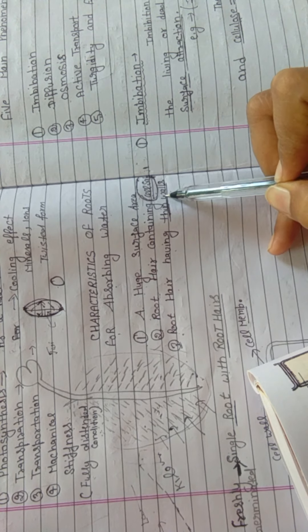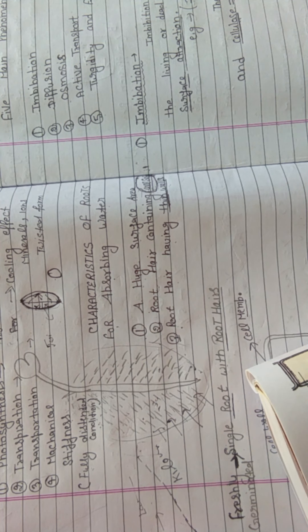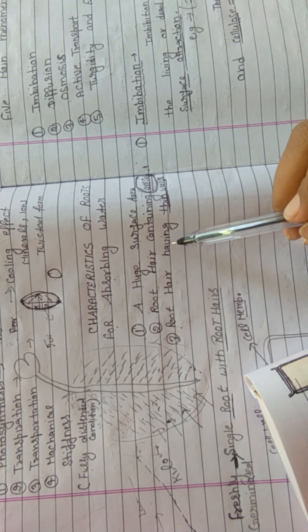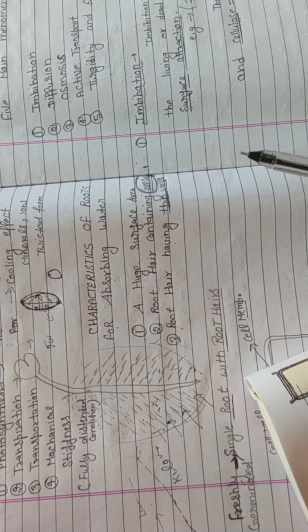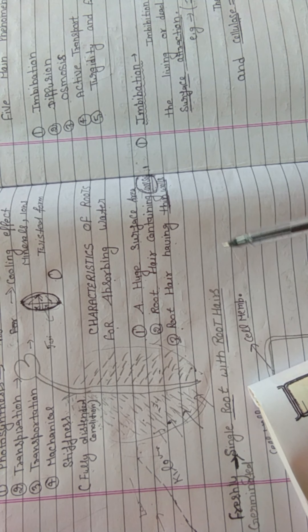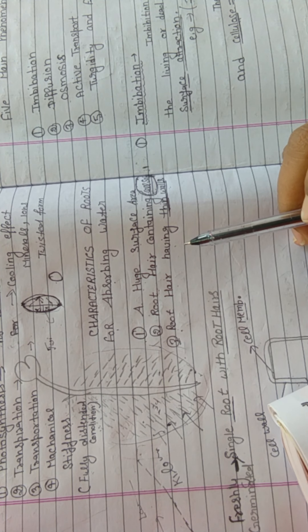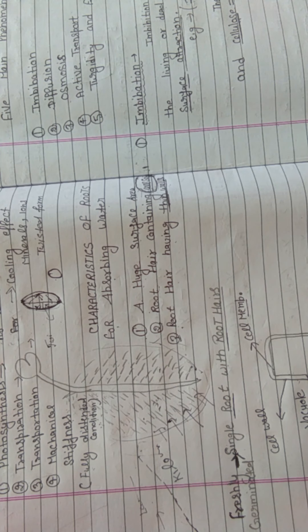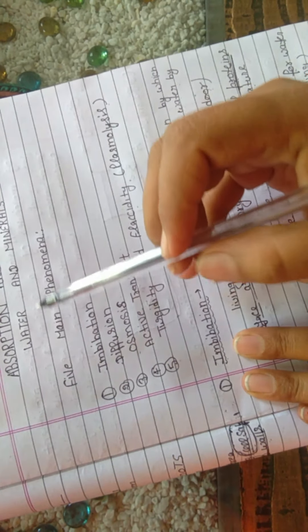Third characteristic: root hairs have thin walls. This allows the movement of water molecules and dissolved substances freely in and out of the cell. The cell membrane is very thin and permeable, which means it allows molecules to pass through, but note it does not allow solute molecules of dissolved salt.